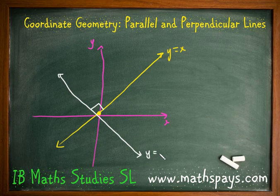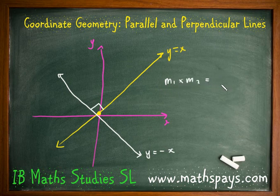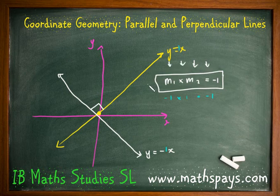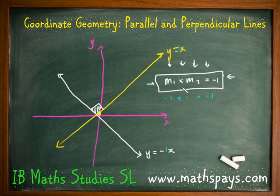That suspiciously looks like the graph of y equals negative x, and it certainly is. We're going to use these two graphs to show a particular property. The property is: if I multiply their gradients together, they always give the same result. In this case, the gradient of one line is negative 1 and the gradient of the other is 1. So negative 1 times 1 equals negative 1, which is the property we can deduce for all perpendicular lines. You need to remember this: for perpendicular lines, when you multiply their gradients together, you always get negative 1.